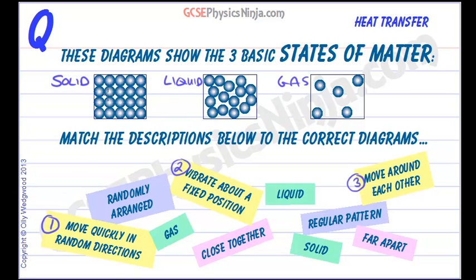Well, solids cannot move in random directions. They're actually vibrating around a fixed point. So that's actually number two, isn't it? Vibrate around a fixed point. So there we are, there's number two.